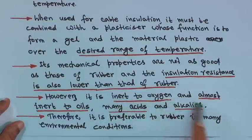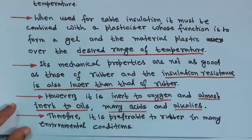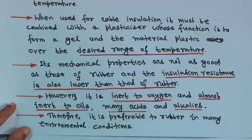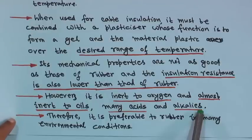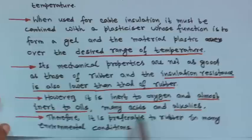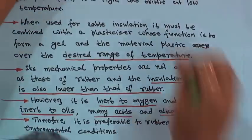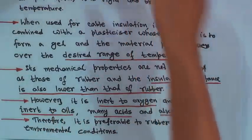However, PVC is inert to oxygen and almost inert to oils, many acids, and alkalis. Therefore, it is preferable to rubber in many environmental conditions. You have to consider which environment the cables are being used in and choose accordingly.